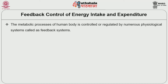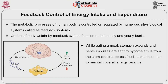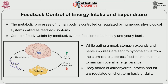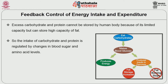Feedback control of energy intake and expenditure: the metabolic processes of the human body are controlled or regulated by numerous physiological systems called feedback systems. Control of body weight by feedback systems functions on both daily and yearly basis. While eating a meal, the stomach expands and nerve impulses are sent to the hypothalamus from the stomach to suppress food intake, thus helping to maintain overall energy balance. Body stores of carbohydrate, protein and fat are regulated on a short-term or daily basis. Excess carbohydrate and protein cannot be stored by the human body because of its limited capacity, but it can store a high capacity of fat.